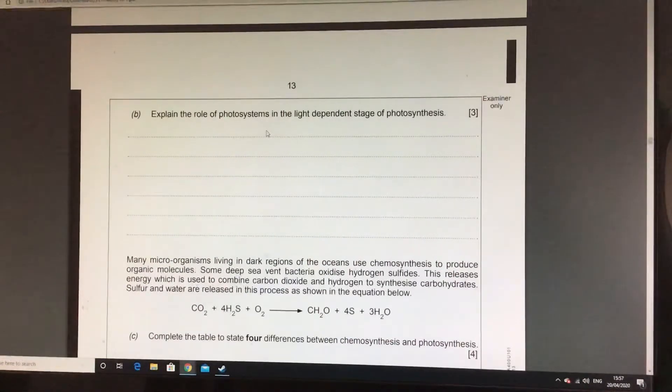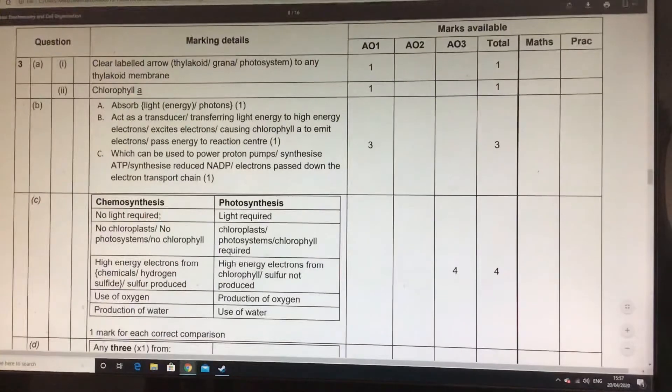It excites electrons. It moves those electrons to a higher energy level. They then flow through the electron transport chain, do pumping, and what's the ultimate end product of the light-dependent stage? You've got ATP made and you've got NADPH made. So, you've got those electrons passed on. Let's have a look at the mark scheme.